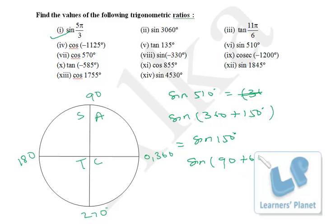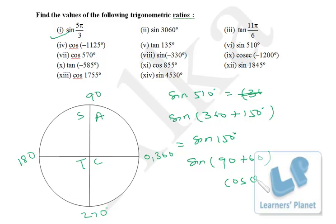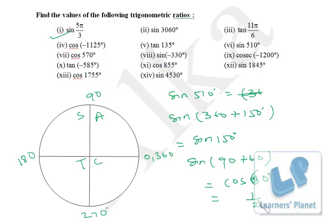Now sine 150° is sine(90 + 60). In the second quadrant, sine is positive, and sine(90 + θ) converts to cos θ. So it becomes cos 60°. Cos 60° is 1/2. Therefore sine 150°, sine 510° — both equal 1/2.